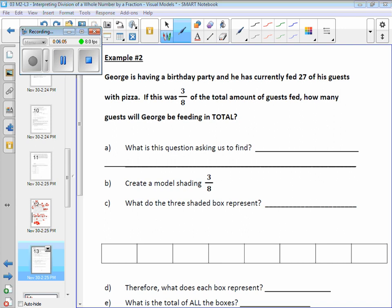Well, this is the same thing. Let's just do it with pizza. George is having a birthday party, and he has currently fed 27 of his guests with pizza. So, if this 27 was only three-eighths of the total amount of guests fed, how many guests will George be feeding in total?